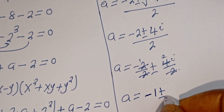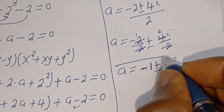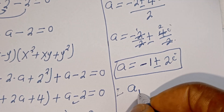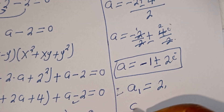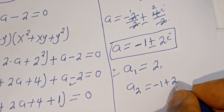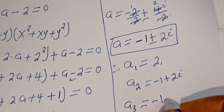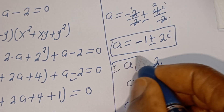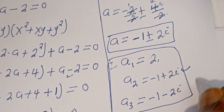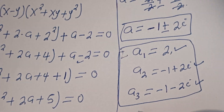Therefore the second and third values of A are: A₂ equals negative 1 plus 2i, and A₃ equals negative 1 minus 2i. These are all the values of A. We have two complex roots and one real root.